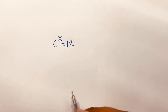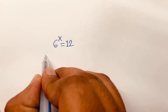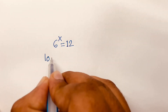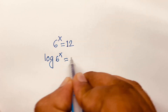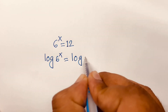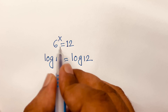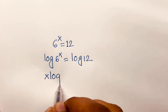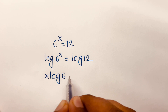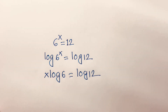How to solve 6 to the power x is equal to 12. We will find out what is the value of x. First of all, I apply log to both sides: log 6^x is equal to log 12. Then the exponent moves to the front, so I can say x·log 6 is equal to log 12.